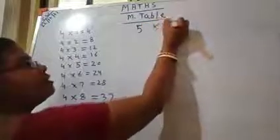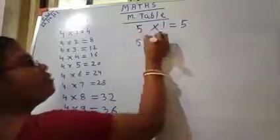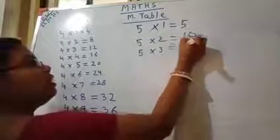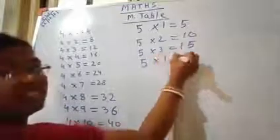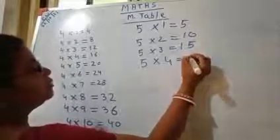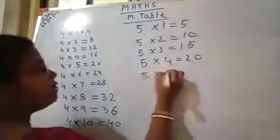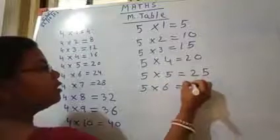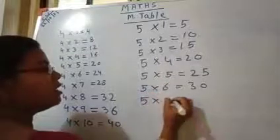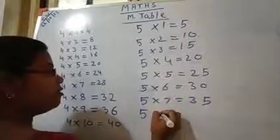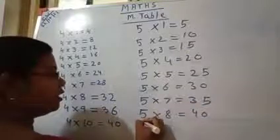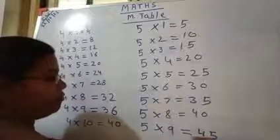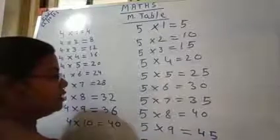Then, 5's table. 5, 1's are 5. 5, 2's are 10. 5, 3's are 15. 5, 4's are 20. 5, 5's are 25. 5, 6's are 30. 5, 7's are 35. 5, 8's are 40. 5, 9's are 45. 5, 10's are 50.